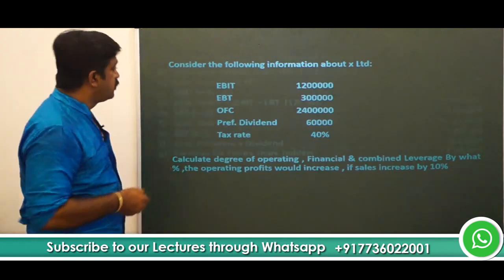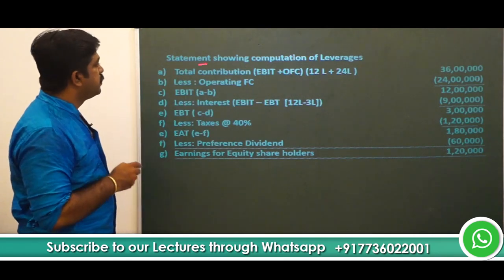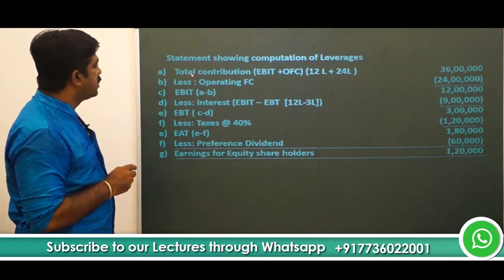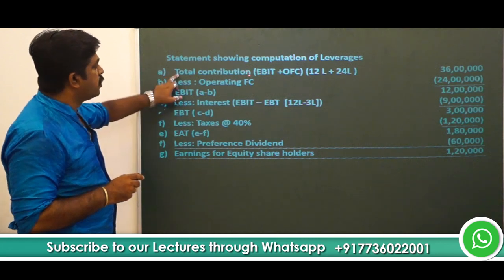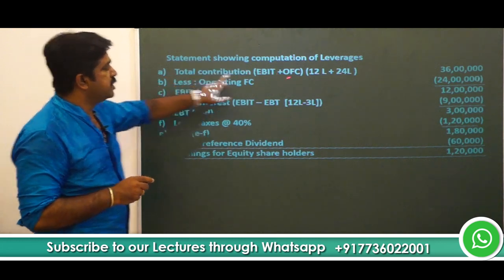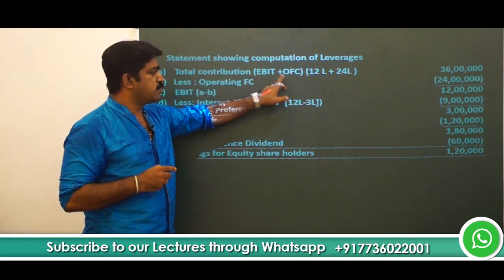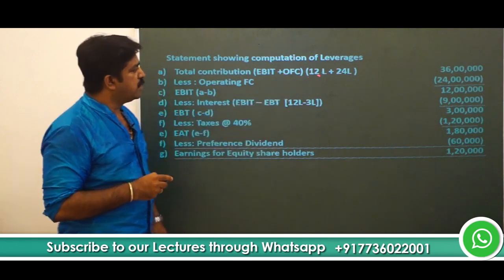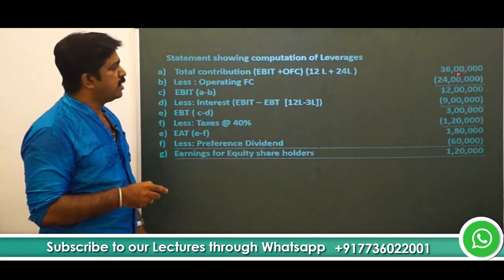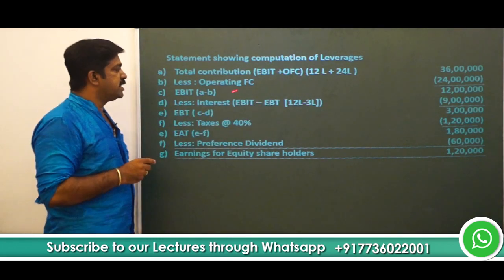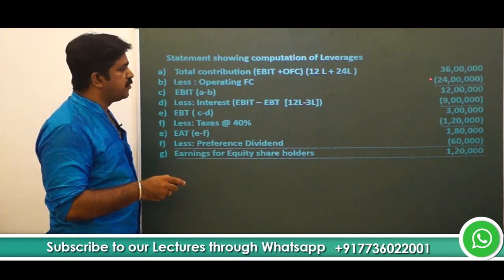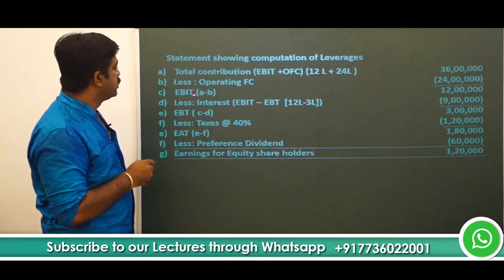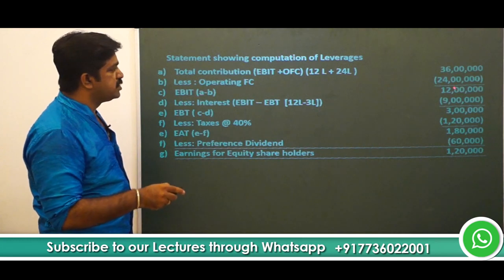First, we will have a statement showing computation of leverages. We will calculate the contribution, which is nothing but EBIT plus Operating Fixed Cost — the summation of EBIT and Operating Fixed Cost. So it is 12 lakhs plus 24 lakhs, which is 36 lakhs. From that, deduct the Operating Fixed Cost of 24 lakhs given in the question, and you get the EBIT, which is 12 lakhs.